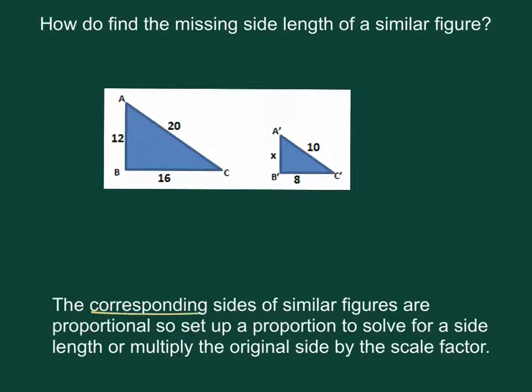The corresponding sides of similar figures are proportional, so you can set up a proportion to find a missing side. So we know this is the original figure, and this is the new figure.